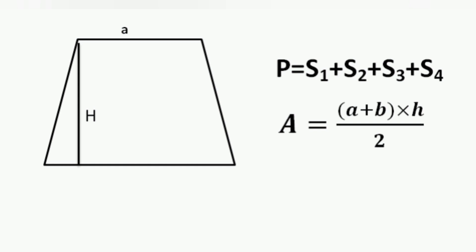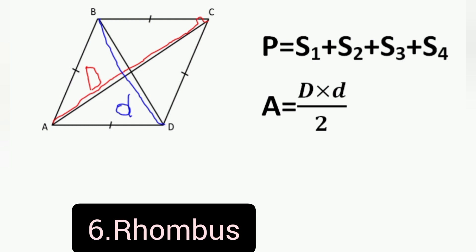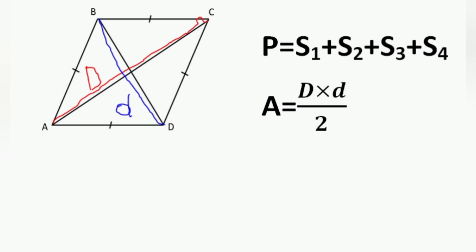Number 6: Rhombus. Rhombus is a quadrilateral with four equal sides. Perimeter of rhombus is equal to side 1 plus side 2 plus side 3 plus side 4. Area is equal to long diagonal times short diagonal divided by 2.